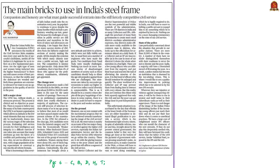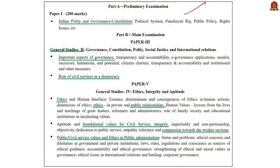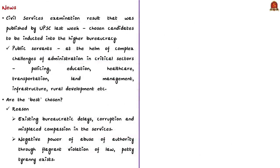Let us take up the next news column from today's editorial page, which is about certain important ethical values in civil services. This column is written by a former CBI director. It has been written in the wake of the recent civil services exam result published by UPSC last week. UPSC has chosen about 900 candidates to be inducted into higher bureaucracy — meaning IAS, IPS, IFS, IRS, etc. These chosen candidates are soon going to be at the helm of complex challenges in critical sectors like policing, education, healthcare, transportation, land management, infrastructure, and rural development.